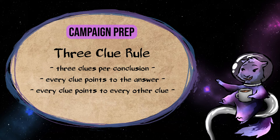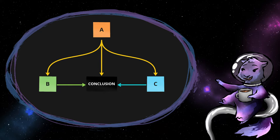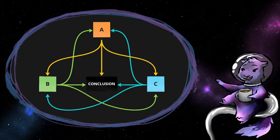you need three clues, and all of those clues need to point to each other. Clue A should point to clues B and C, clue B should point to C and A, clue C should point to A and B, and all of them should point to the answer. This looks more complicated than it is.